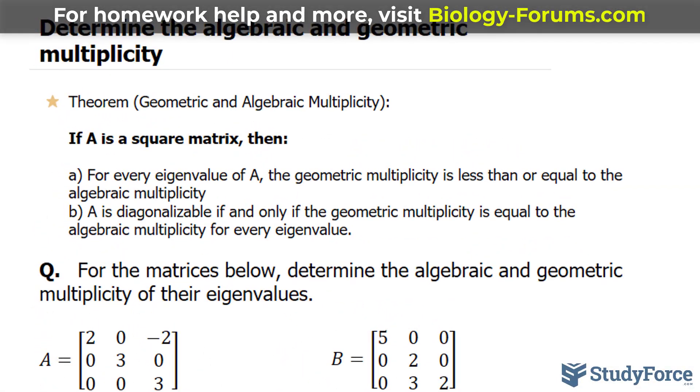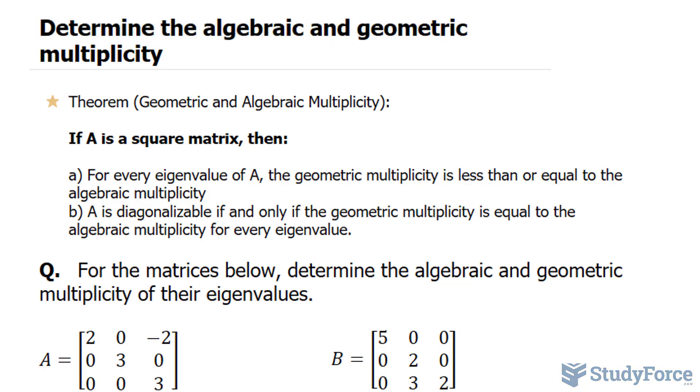The first point says that if we have a matrix A, for every eigenvalue, the geometric multiplicity is less than or equal to the algebraic multiplicity.